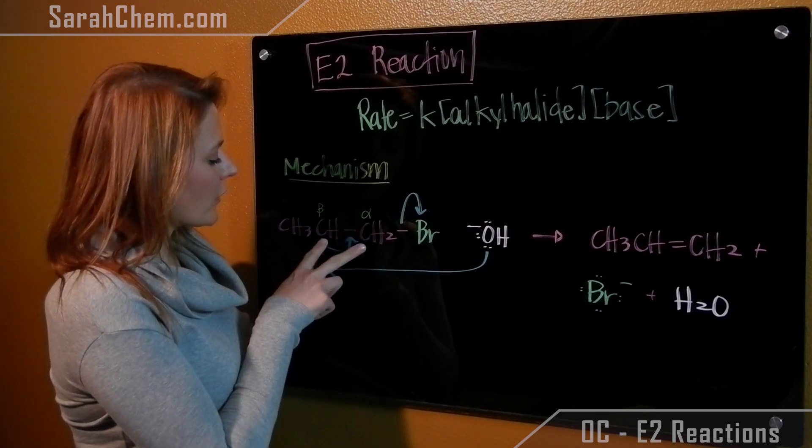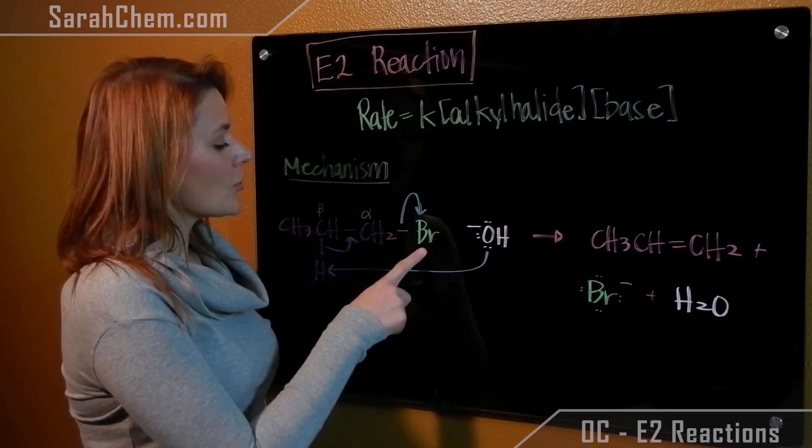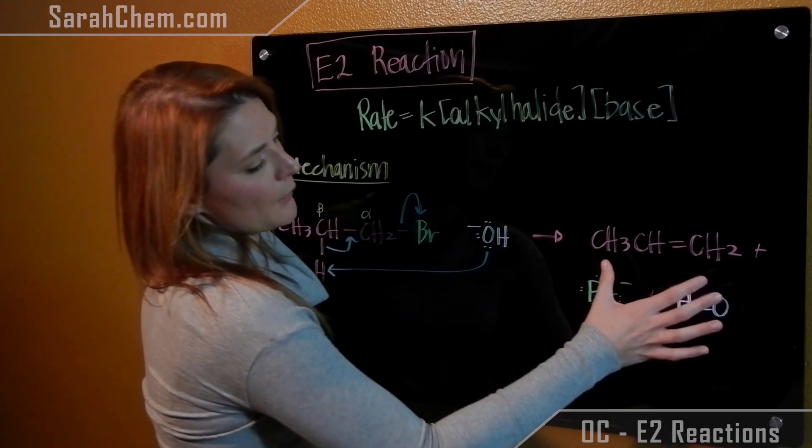When this bond transfers and I form a double bond between these two, carbon cannot exceed the octet, so the bromine group gets kicked off. The end analysis of this is that we form an alkene,